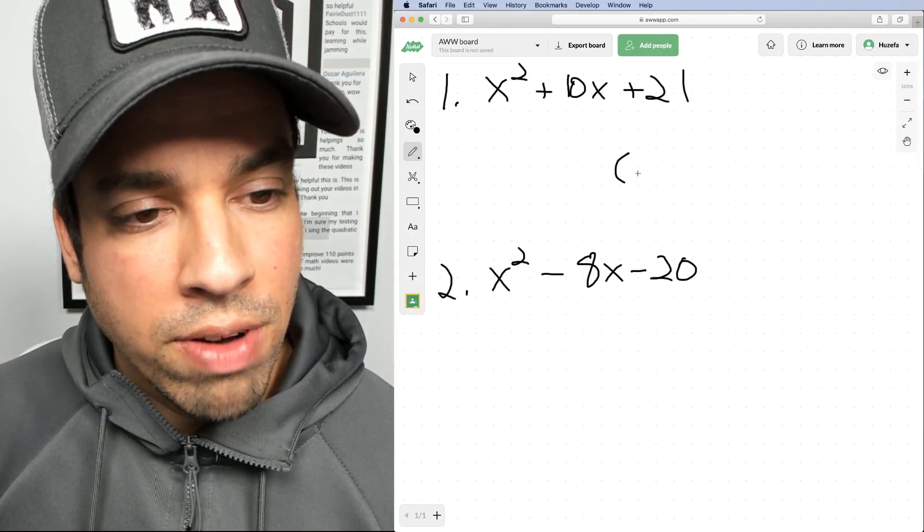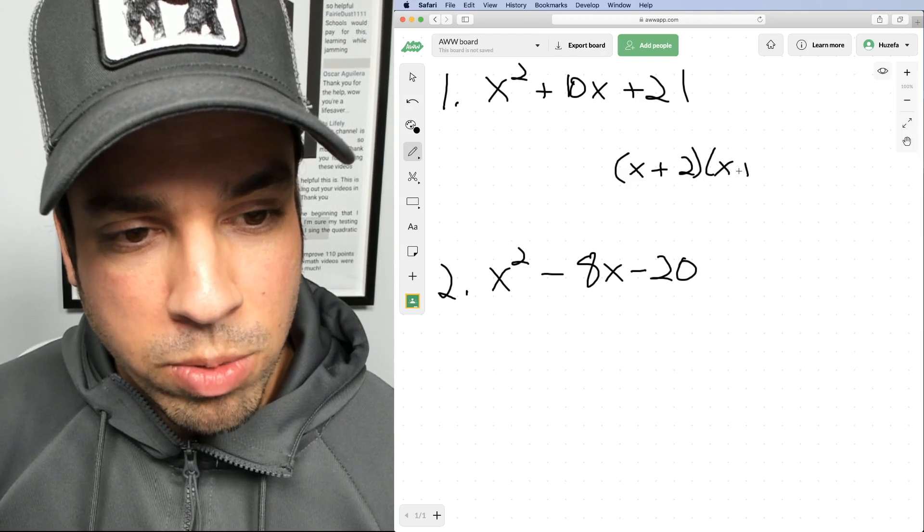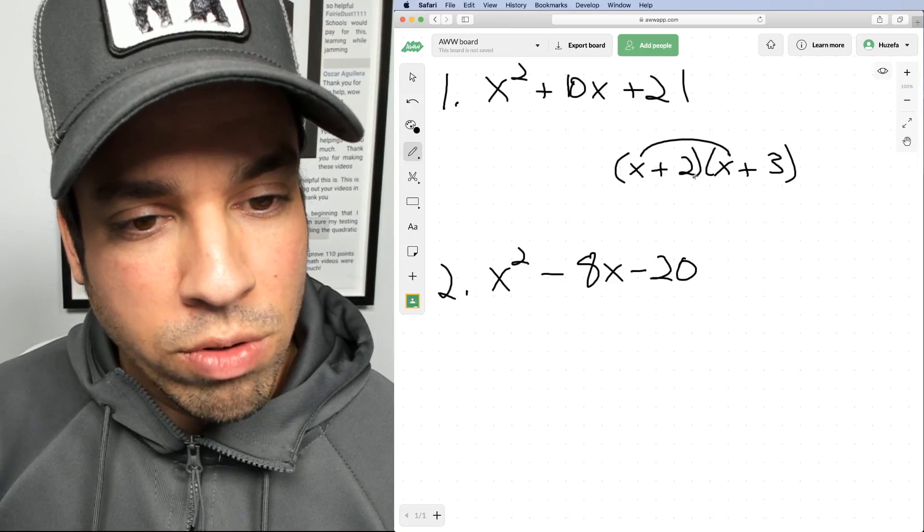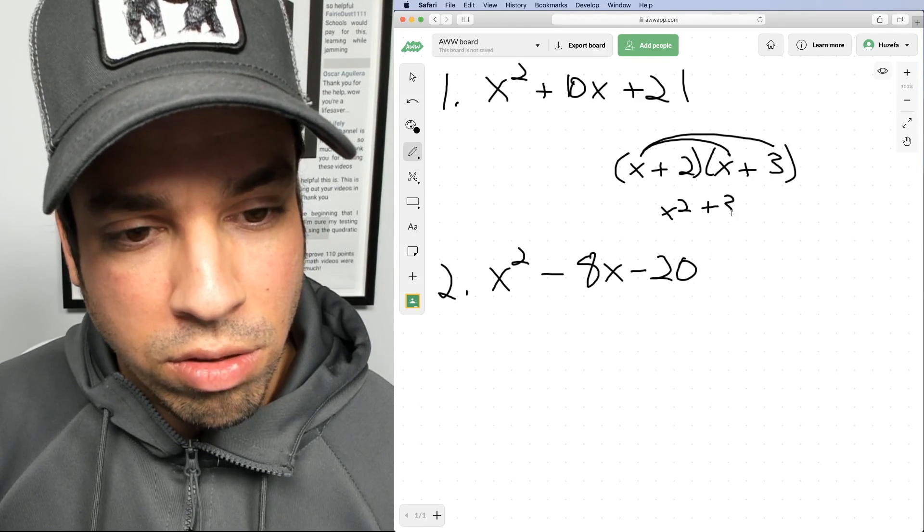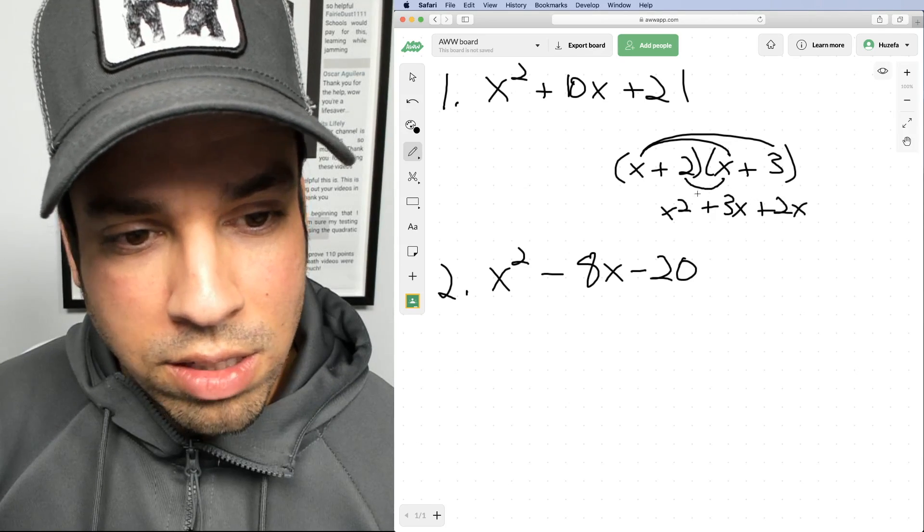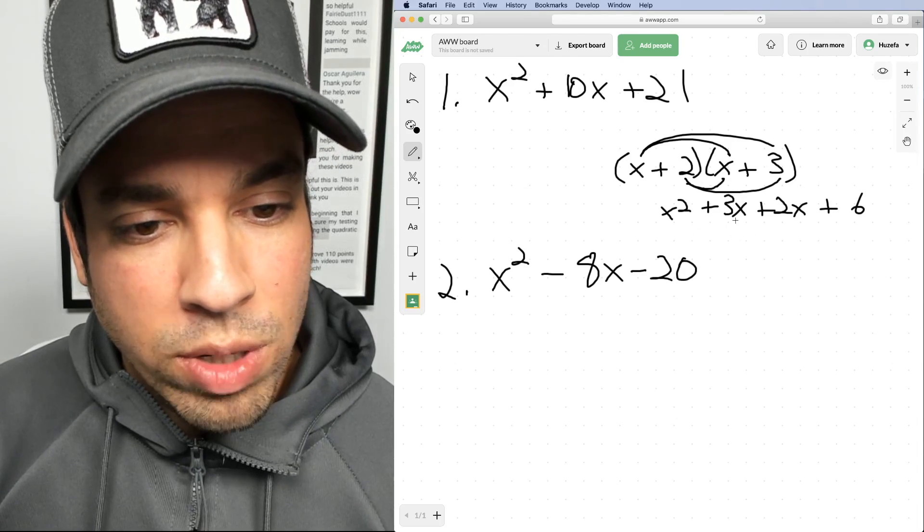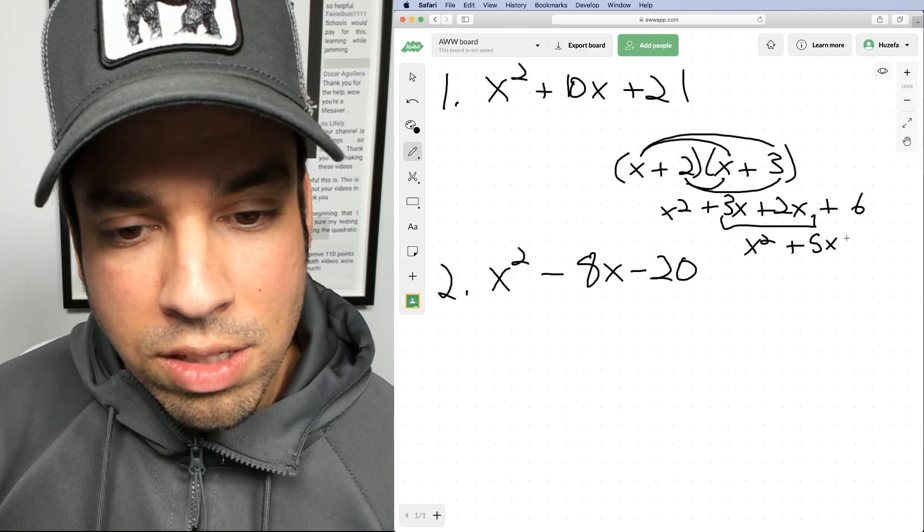For example, if I have two sets of binomials, x plus 2 times x plus 3, the way that they would multiply is: first, multiply these and we get x squared. Then we get 3x. Then these multiply and we get 2x. And then last, these multiply and we get 6. We combine like terms and this ends up being x squared plus 5x plus 6.